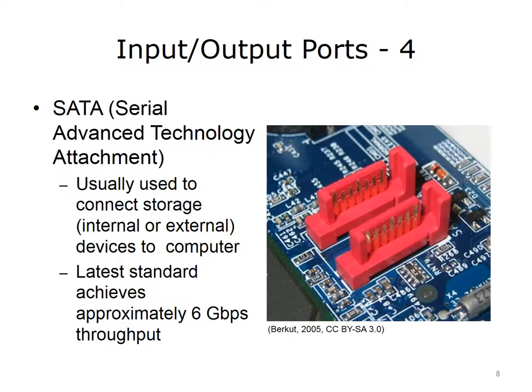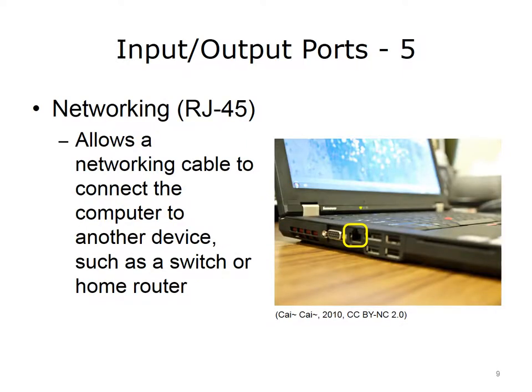The image shown to the right of this slide illustrates two motherboard SATA ports. The third-generation SATA achieves throughput of six gigabits per second. A networking port, also known as an RJ45 jack, is still found on today's computers. The square RJ45 jack allows a networking cable to connect the computer to another device, such as a switch or a router.